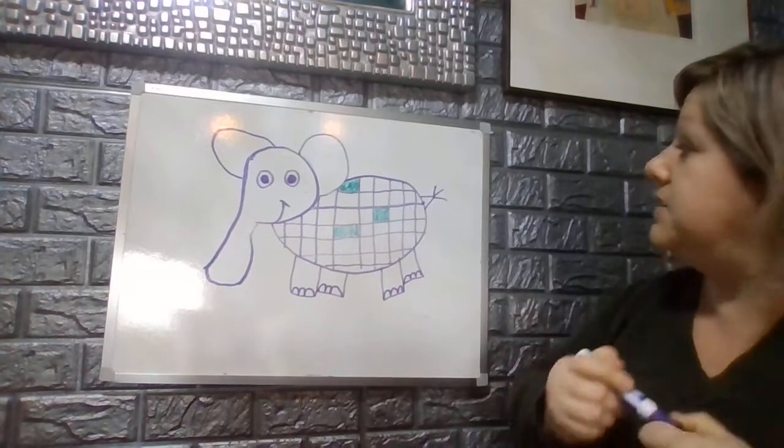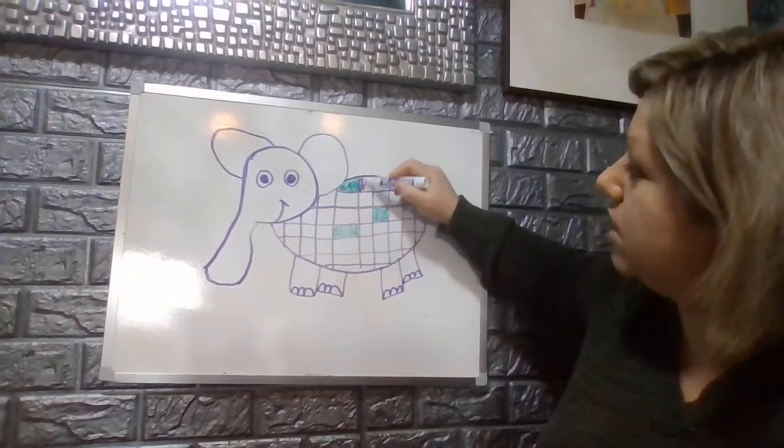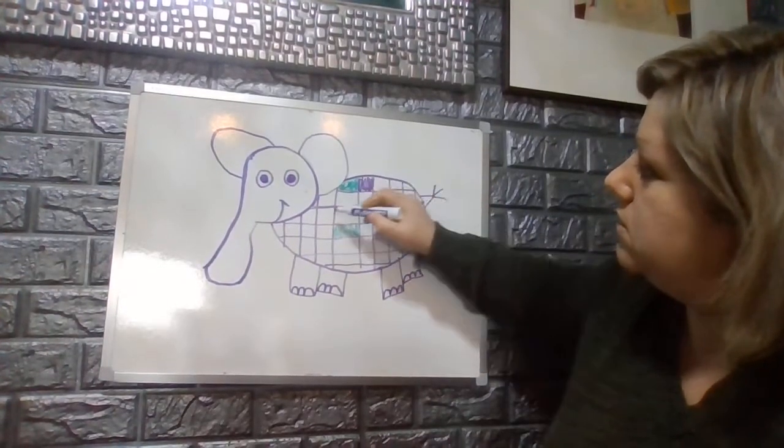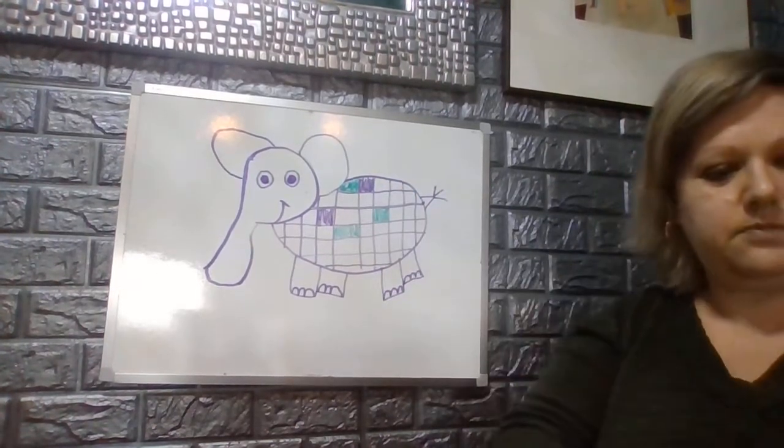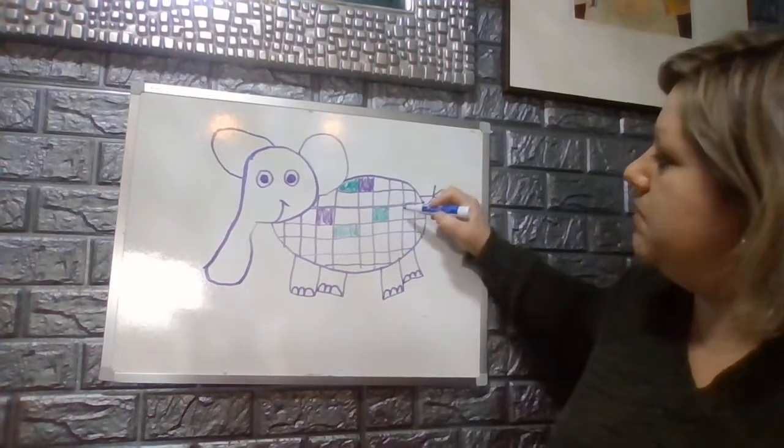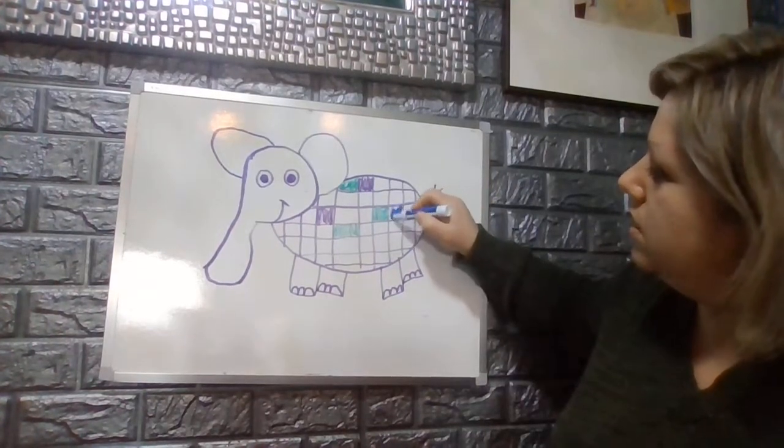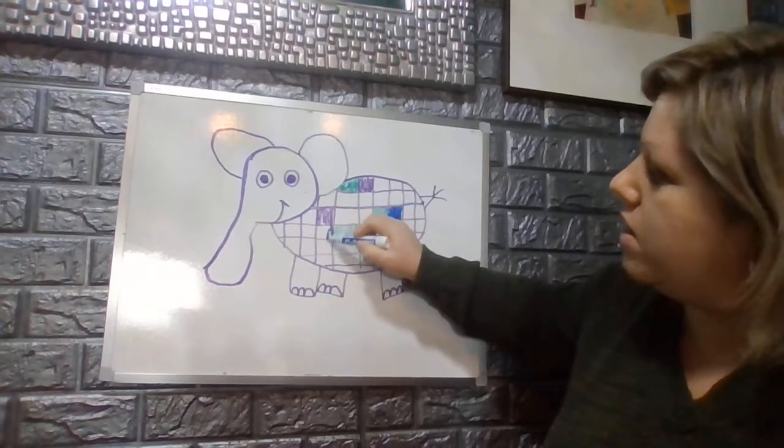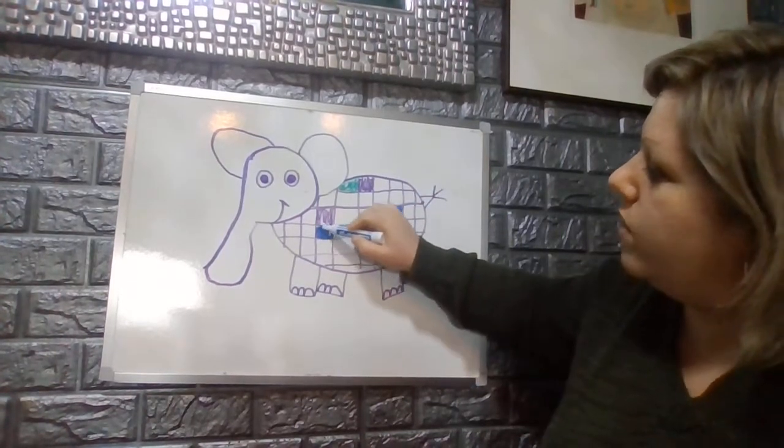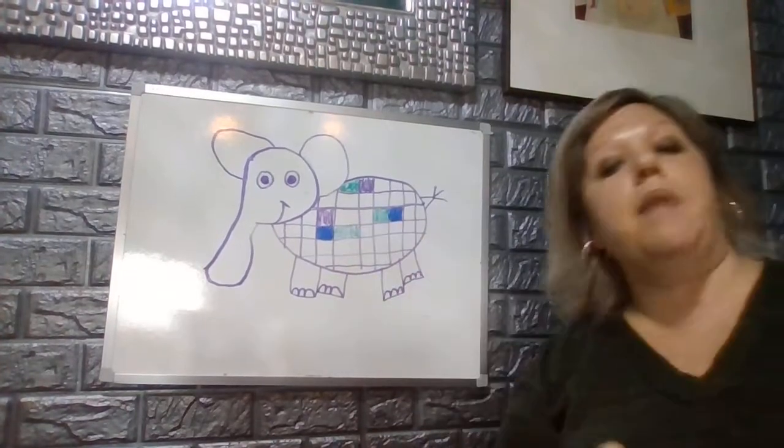Then maybe I want to add some purple in. So I'm going to color some of them in purple. Then maybe I want to take some blue. So I'm going to color in some in blue. Remember to stay in the squares so you can see the squares when you are completed.